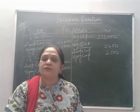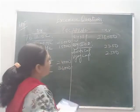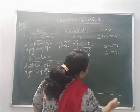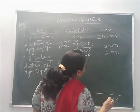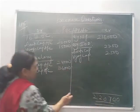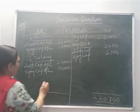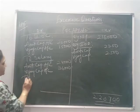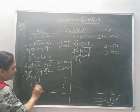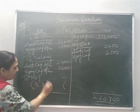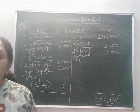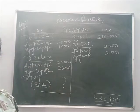The profit sharing ratio is 3:2. To complete the question, total up the credit side, find out the net profit remaining, and divide it among the partners in the ratio 3:2. Find out the profit and complete the question.